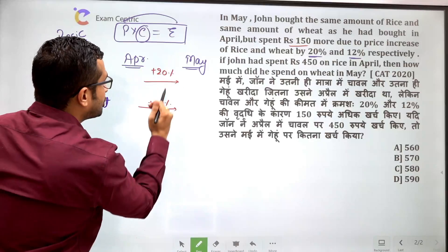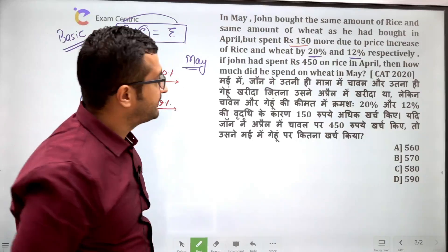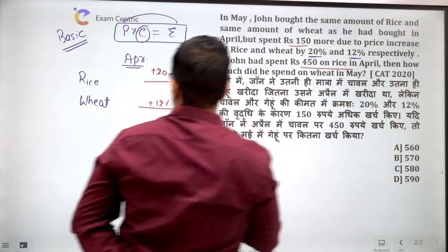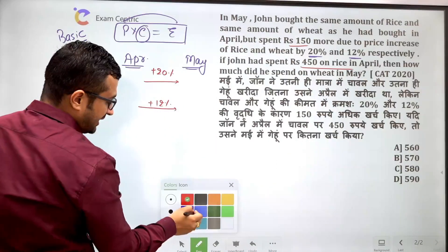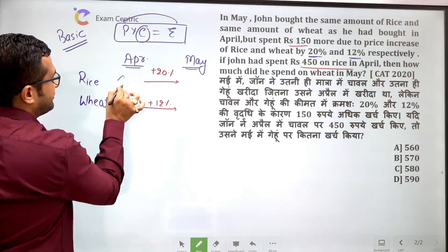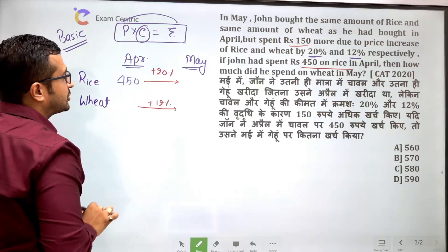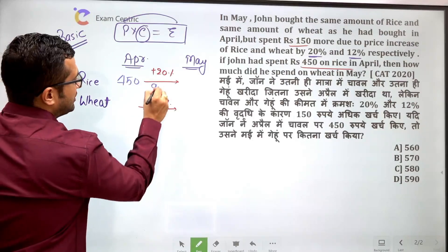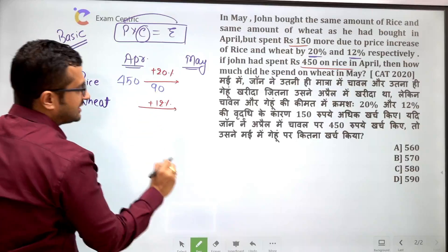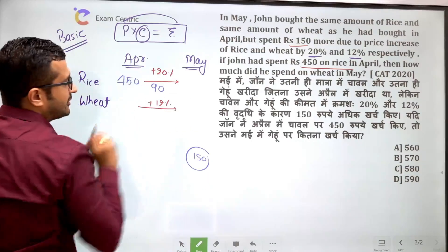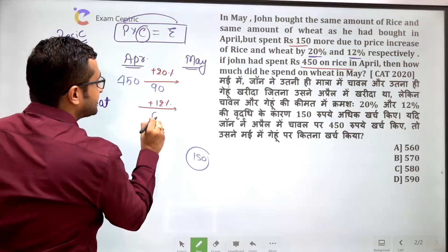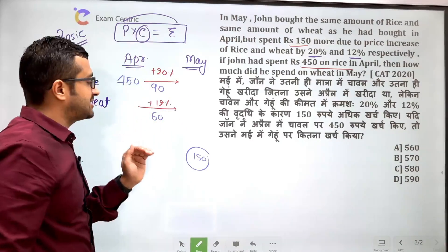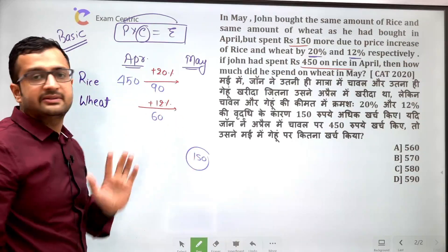In दोनों में total increase ₹150 हुआ है। John ने April में rice पर ₹450 खर्चा किया था, तो उसका 20% change होगा: 45 × 2 = ₹90। Total change ₹150 है, तो wheat का change = 150 − 90 = ₹60 होना चाहिए।